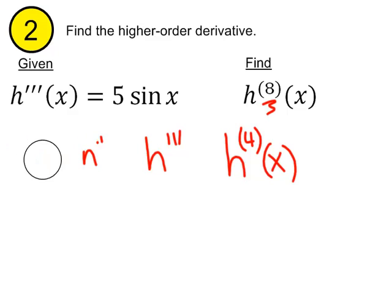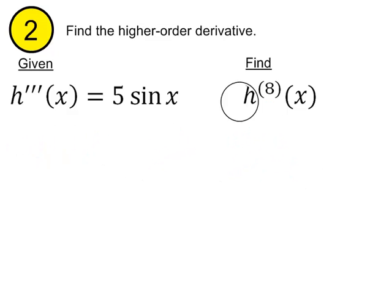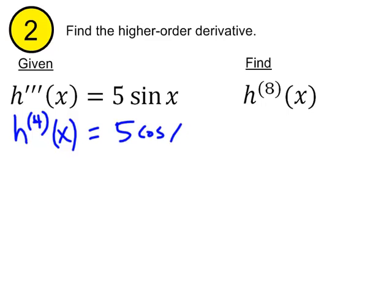Okay. So with that being said, if we know what the third derivative is, all we have to do is derive it again to get the fourth derivative, right? So here I'll use that notation, h parentheses four of x. And if I derive that, I would get five cosine x.